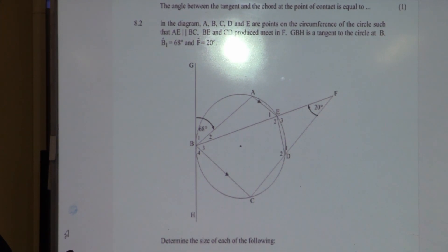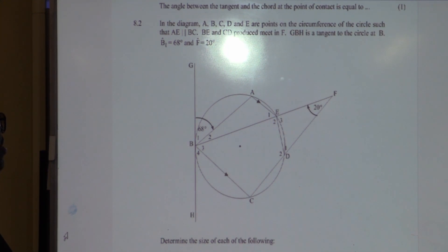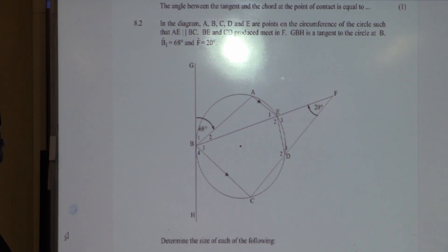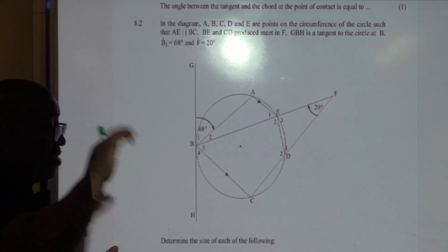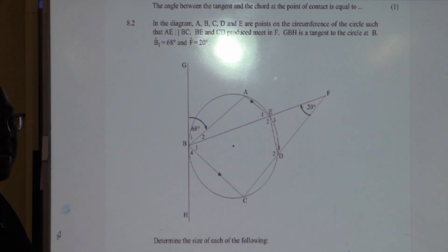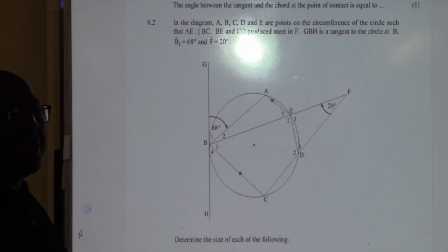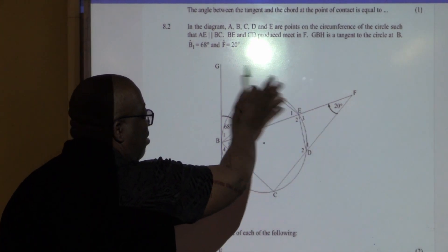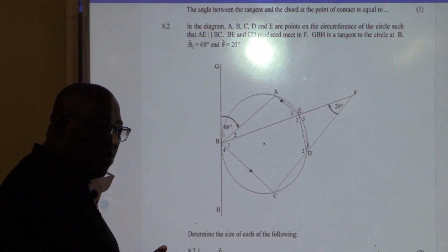Well, BE and CD produced meet at F. GBH is a tangent to the circle at B. This is a tangent. I think of theorems that deal with a tangent. Tangent-chord theorem, tangent-radius theorem, two tangents from the same point. I don't see two tangents from the same point here. So, that theorem falls off. Tangent-radius. Radius is coming from the center. There is no line that is coming here to the tangent. So, that one falls off.